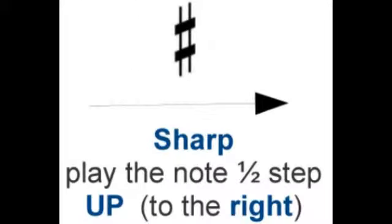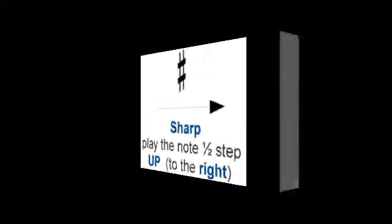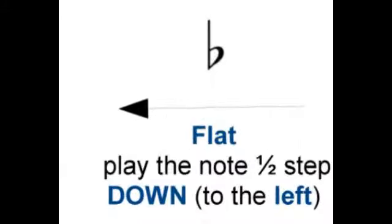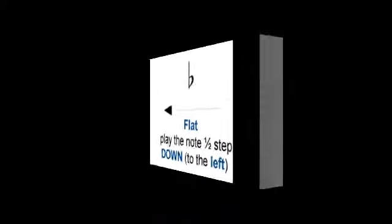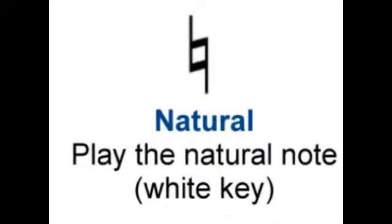First up is the sharp sign. With the sharp sign, you're going to play the note a half step up — it's a half step up or to the right. The flat symbol indicates that you should play that note a half step to the left, and the natural symbol cancels out a previous sharp or flat and tells you to just play that white key. Let's go further — I'll explain this in more detail.